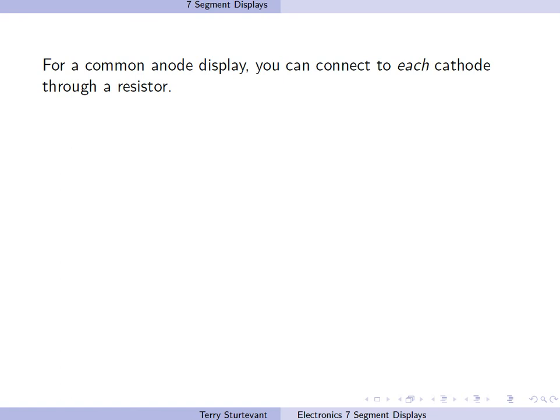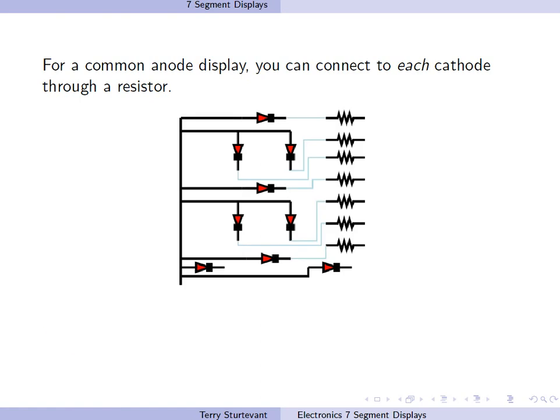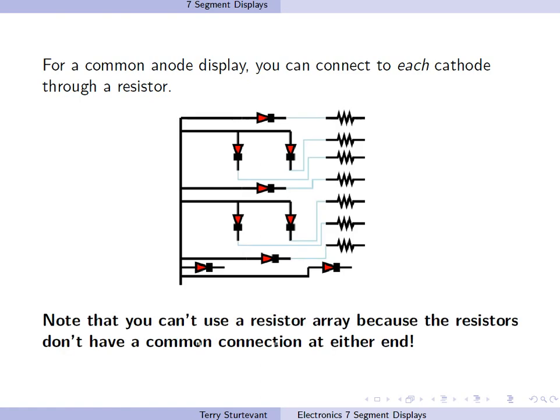For a common anode display, you can connect to each cathode through a resistor. Note that you can't use a resistor array because the resistors don't have a common connection at either end.